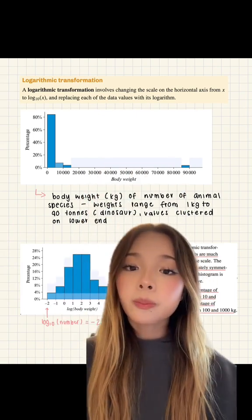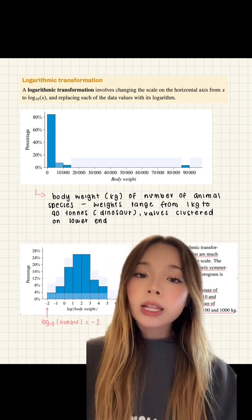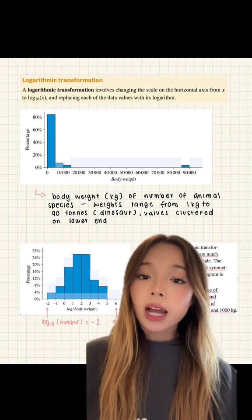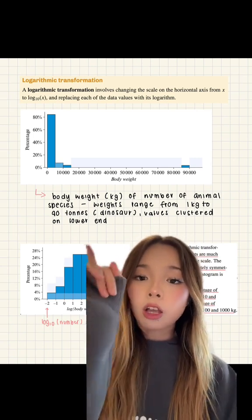So this graph here shows us the body weight in kilograms of the number of animal species, weights ranging from 1 kilogram to 90 tons, such as a dinosaur, which is why the values are clustered to the lower end.